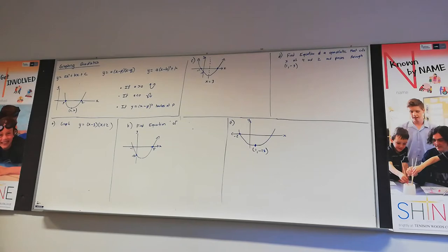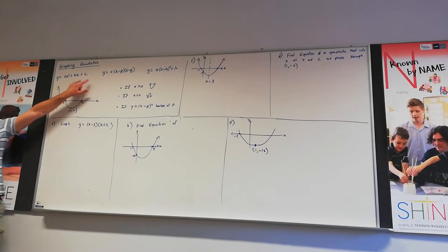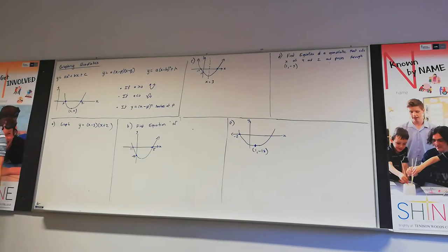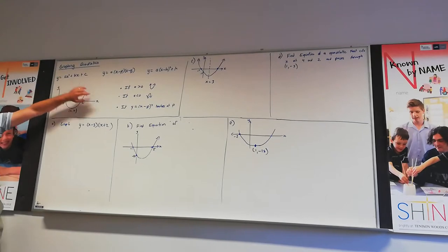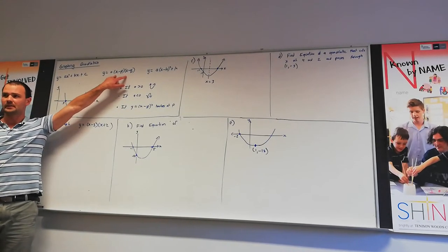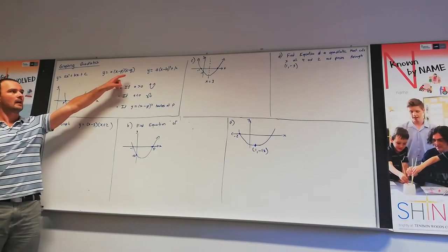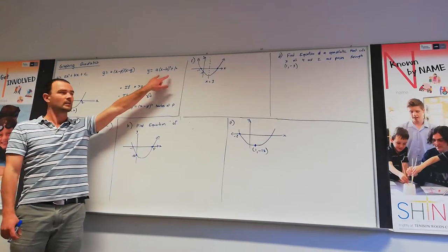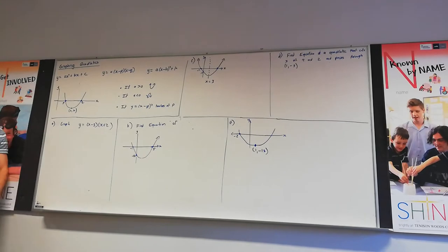There are three ways we can represent a quadratic. First is the general form: ax² + bx + c. If we factorize that, we can write it in terms of its factors. Each form tells us different things. The general form tells you the y-intercept — because the y-intercept occurs when x is 0, so the y-intercept is c. The factored form tells you the roots, where it crosses the x-axis at points p and q. Then if we complete the square, we get the vertex form.